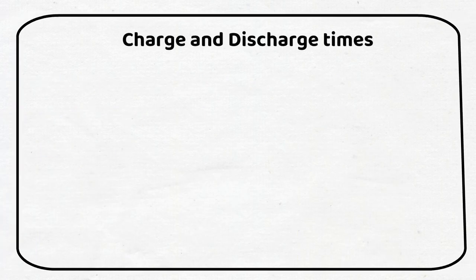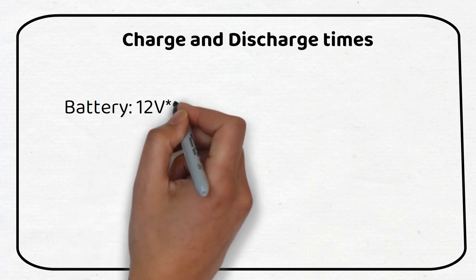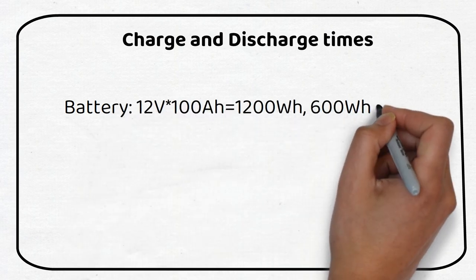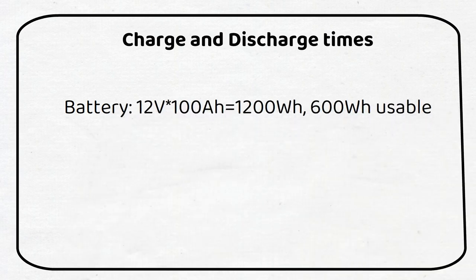Let's look at the charge and discharge time. The 12 volt 100 amp hour battery contains 1200 watt hours. But only 50% of that is usable, otherwise the battery will degrade fast. This leaves us with 600 watt hours.